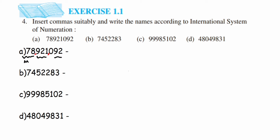For the second number, after two digits we get one comma, and after four more we get another comma. So this is the ones period, this is the thousands period, and this is the millions period. It reads as 7 million, four hundred fifty-two thousand, two hundred eighty-three.